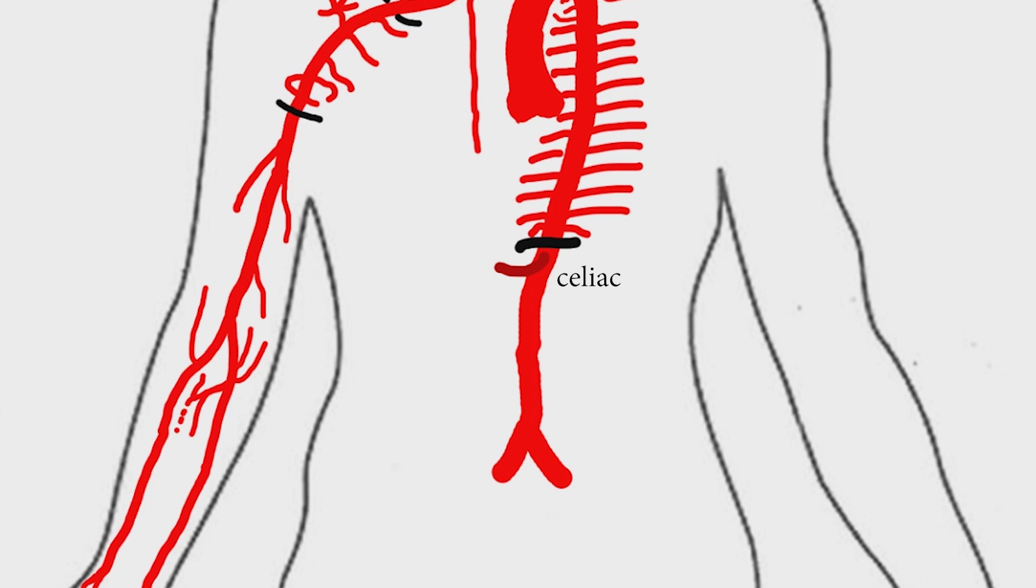Celiac trunk arises at the level of 12th thoracic vertebra. The celiac artery supplies blood to the liver, stomach, abdominal esophagus, spleen, and the superior half of both the duodenum and the pancreas. These structures correspond to the embryonic foregut. It divides into common hepatic, splenic, and left gastric arteries.